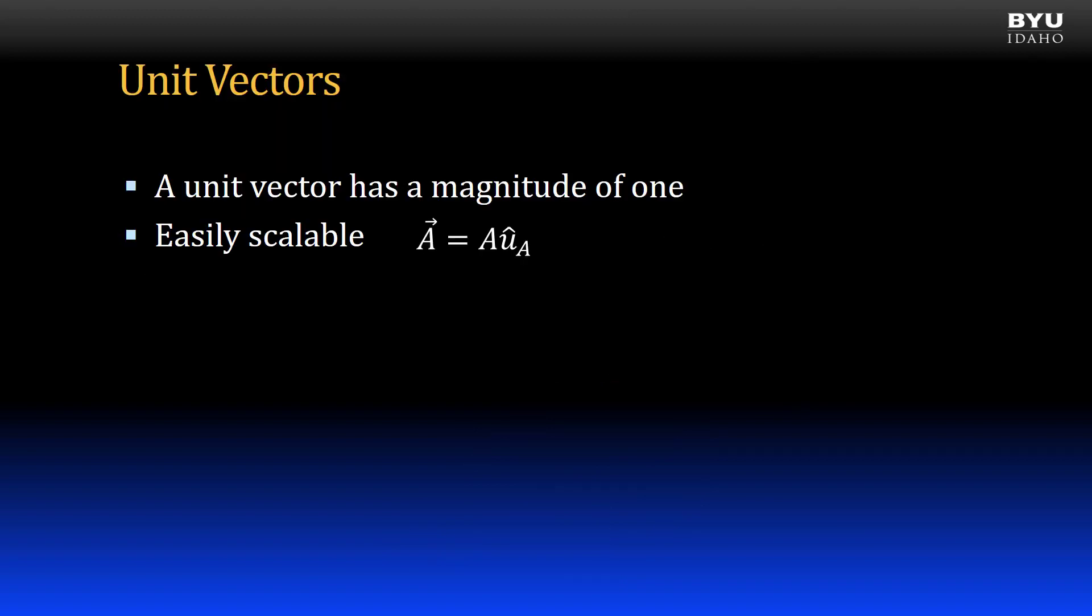These operations can also be performed in reverse. We can take a vector and find a unit vector that acts in the same direction as the original vector. Rewriting this equation shows us how to get the unit vector from a vector. We divide the original vector by its magnitude.